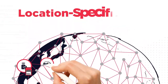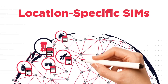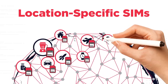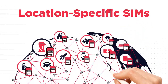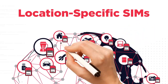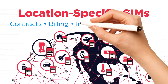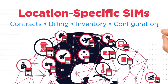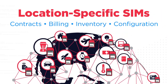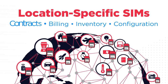You could ship location-specific SIMs with each device, with network contracts for each new country, but then you must manage contracts and billing, SIM inventory, and device configuration — and that could be for thousands of devices in dozens of regions.